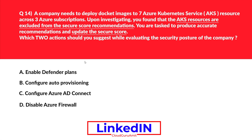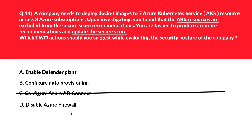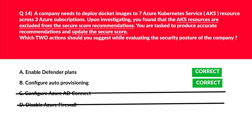The next question is about Docker images, security, and Kubernetes. Option A — enable Defender Plans: we need to enable the Defender for Containers plan to update the secure score, so this is a potential answer. Option B — configure auto provisioning: we need to deploy to container resources with auto provisioning, another potential answer. Option C, Azure AD Connect, is completely off-topic. Option D, disabling Azure Firewall, does the opposite of what's needed. Lock options A and B as the correct answers.